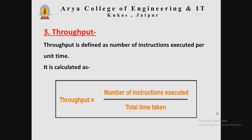The third parameter is throughput, defined as the number of instructions executed per unit time — that is, how many instructions are executed in a unit time. Throughput is calculated using the formula: throughput equals number of instructions executed divided by total time taken.